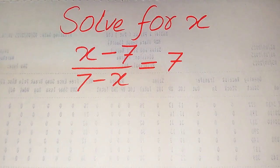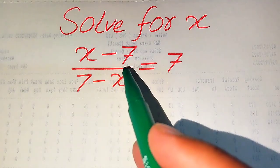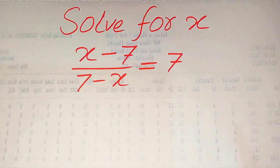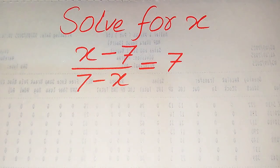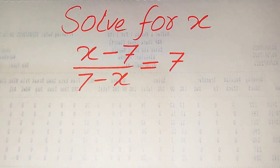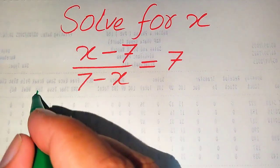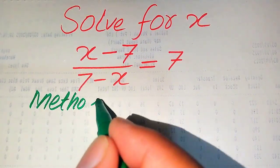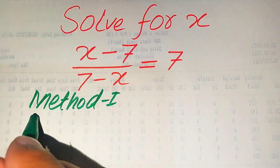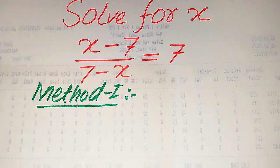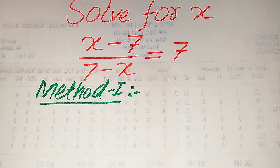Hello everyone. How to solve this problem for the values of x if we have x minus 7 divided by 7 minus x equals 7. We solve this problem for all the values of x. First we find all the roots of this equation, and at the end we will verify which of these roots are solutions and which are extraneous roots. We will solve this using two methods.